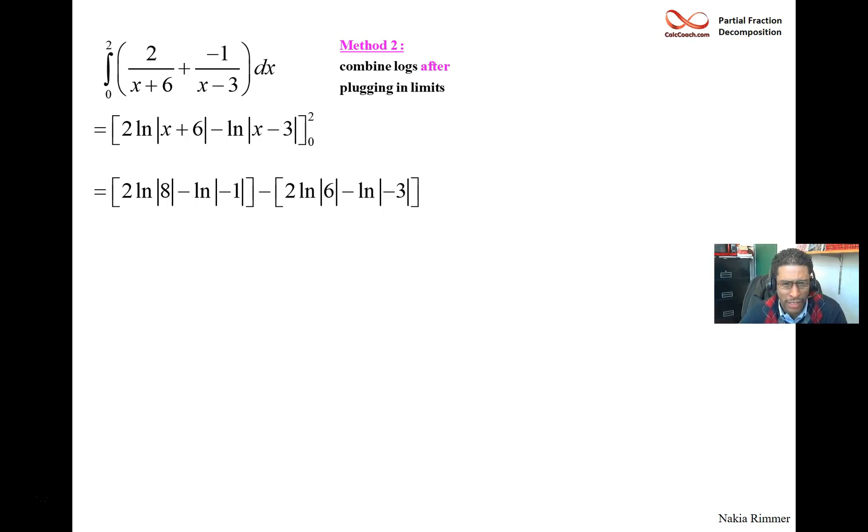It's absolute value bar, so that negative 1 becomes a 1. The negative 3 becomes a 3. And so then we have 2 log 8 minus 2 log 6. And then, be careful here, it's got to be a plus log 3 because it's a double minus there.